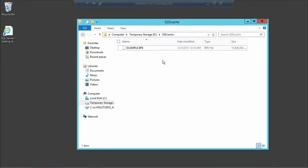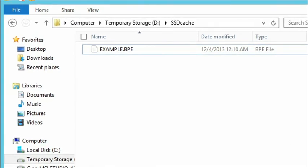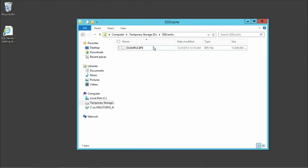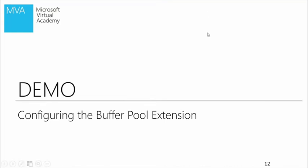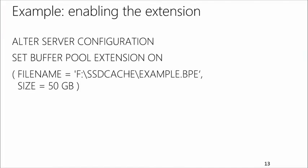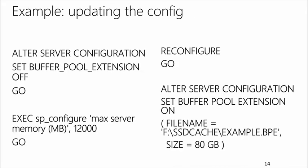When the feature is configured, the only thing you see is a file in the folder you chose to store it — it's just a normal file, so you can use any file storage device. To quickly recap: first you configure your buffer pool extension specifying size and location. If you want to change the config, turn it off first, then update the configuration parameters, then turn it back on.